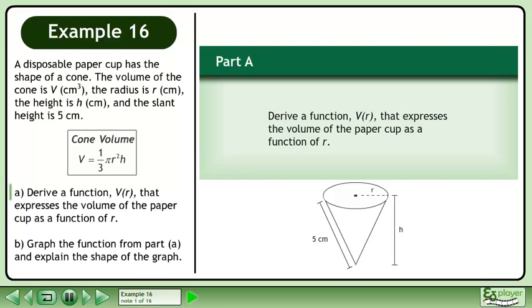Recall that the volume of a cone is V equals 1 over 3 pi r squared h. In part A, derive a function V that expresses the volume of the paper cup as a function of r.